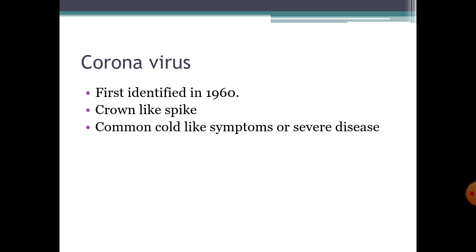These coronaviruses were first identified in the 1960s. They have crown-like spikes on their surface. In Latin, corona means crown. This name refers to the appearance of these surface projections resembling the solar corona.